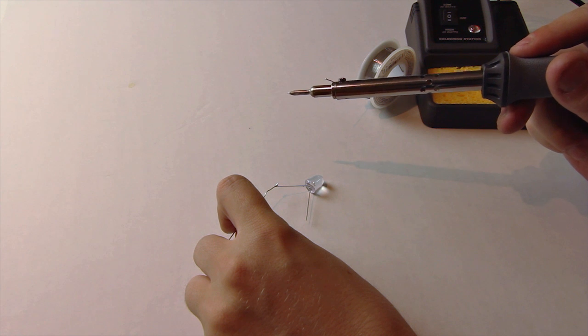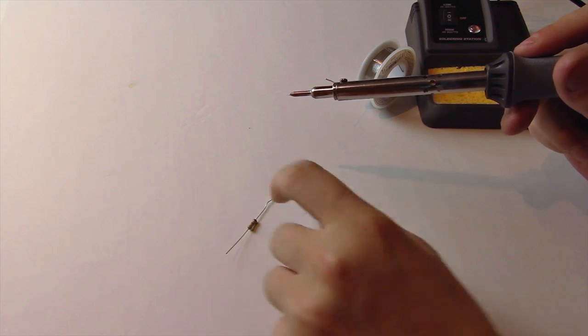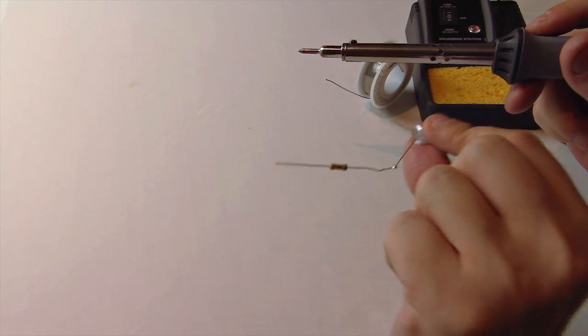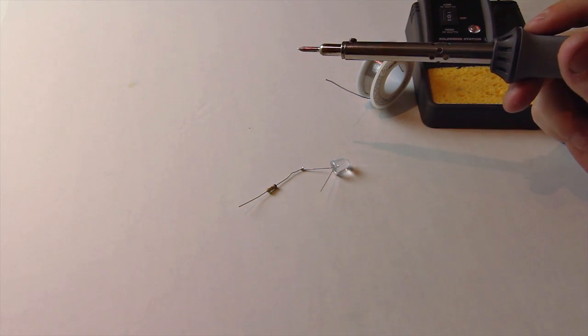First things first, I'm going to go ahead and solder the resistor up to the anode of the LED. Now in most cases, the anode is the longer wire sticking out of the LED.